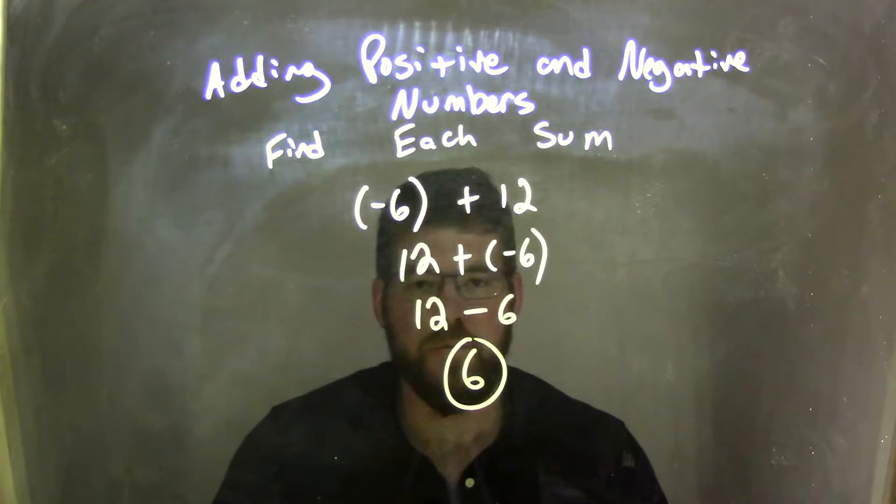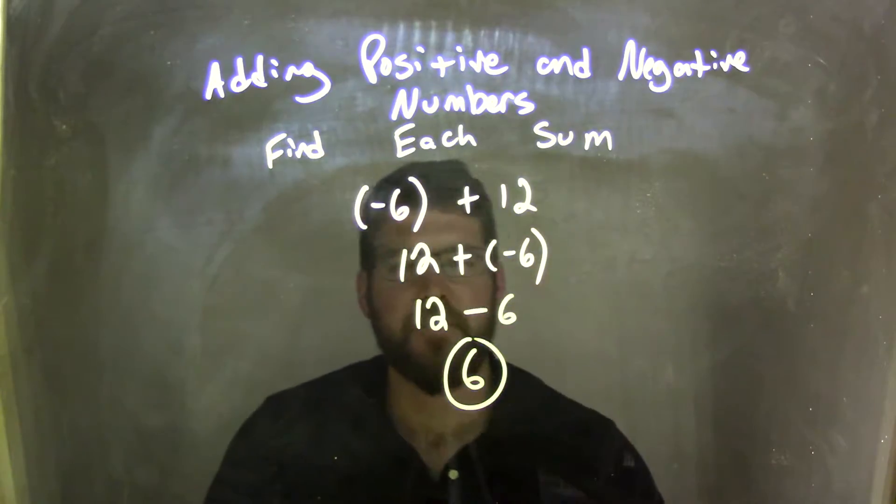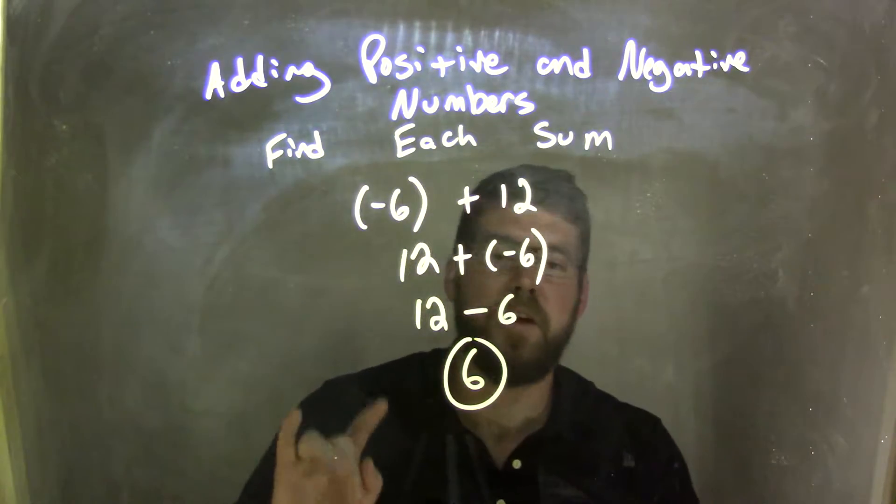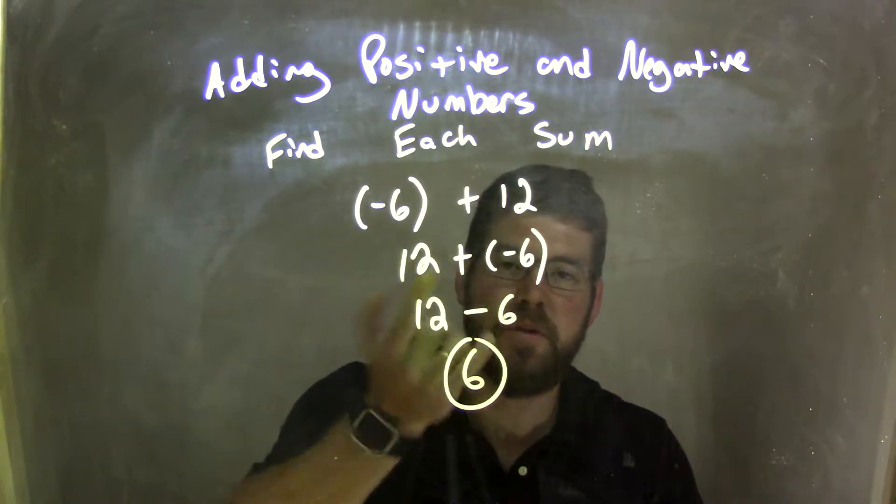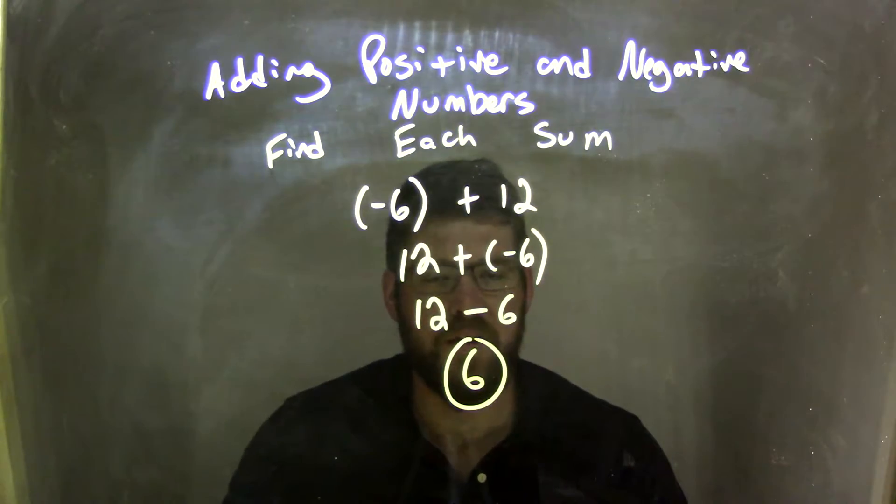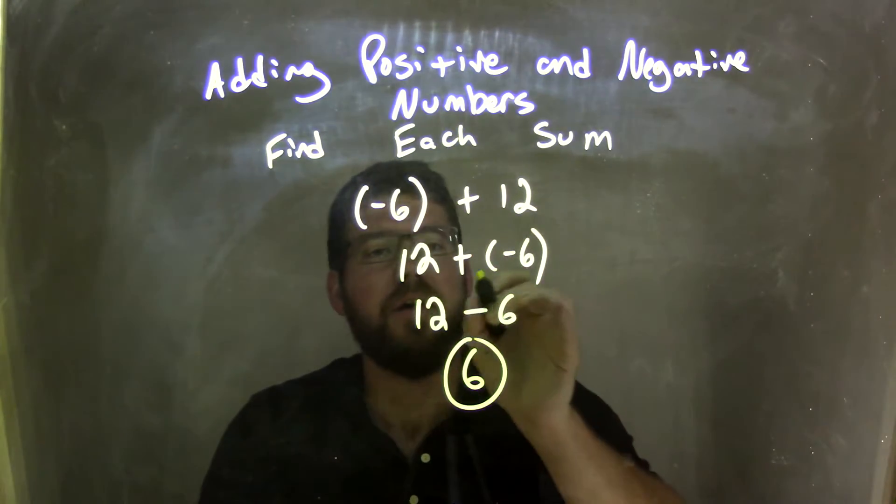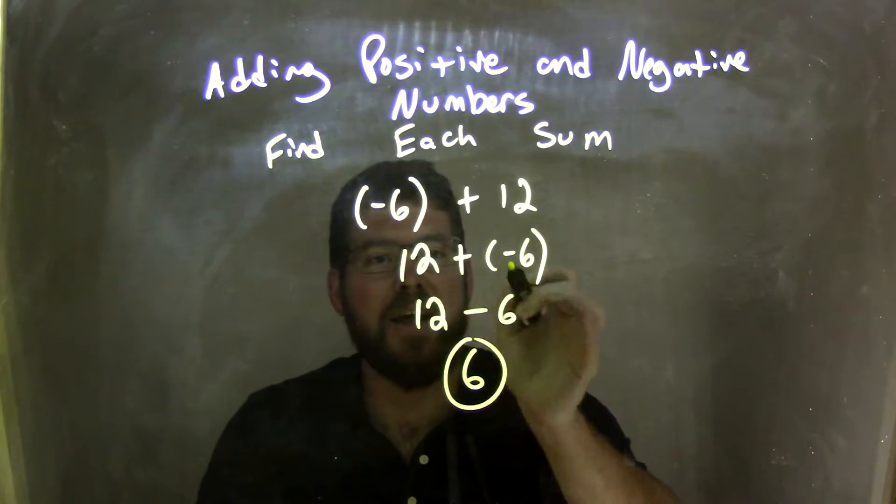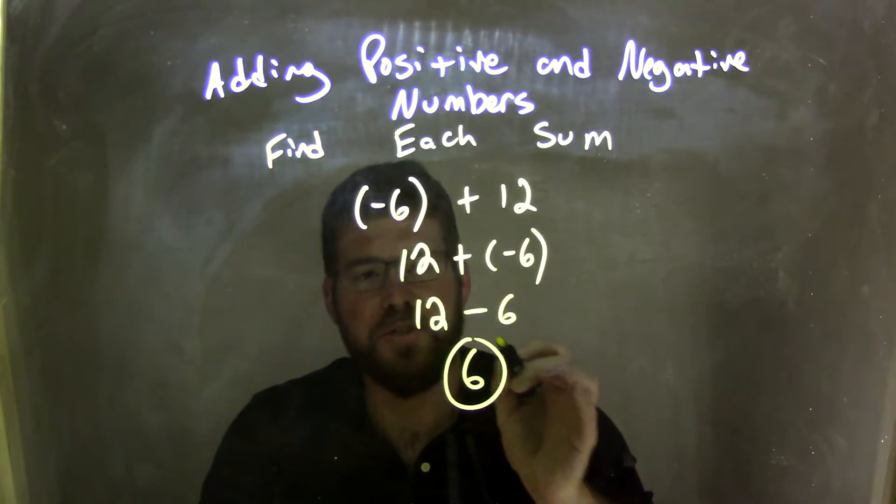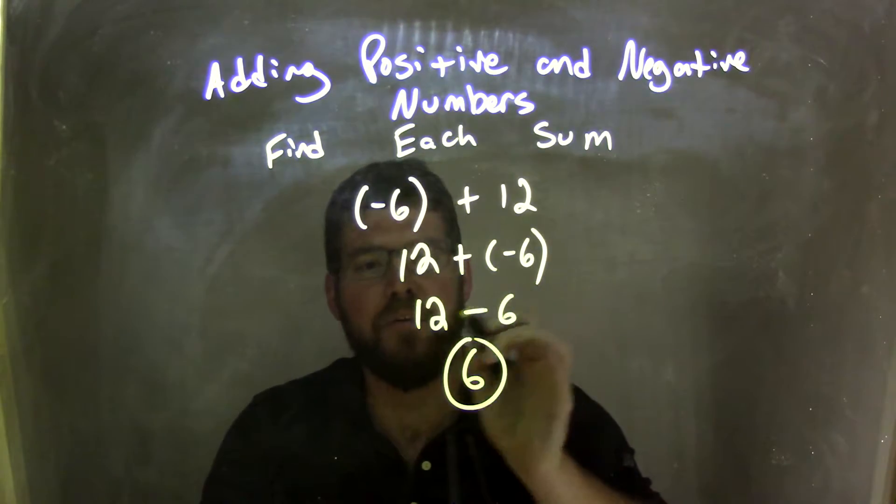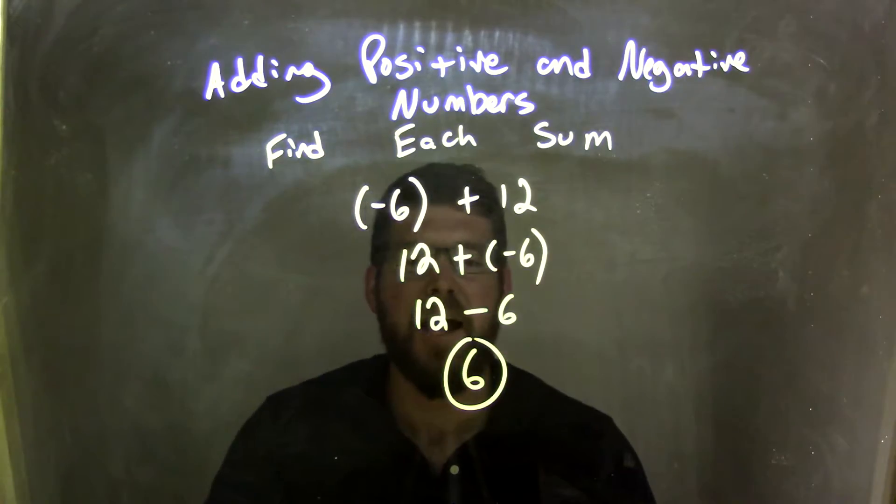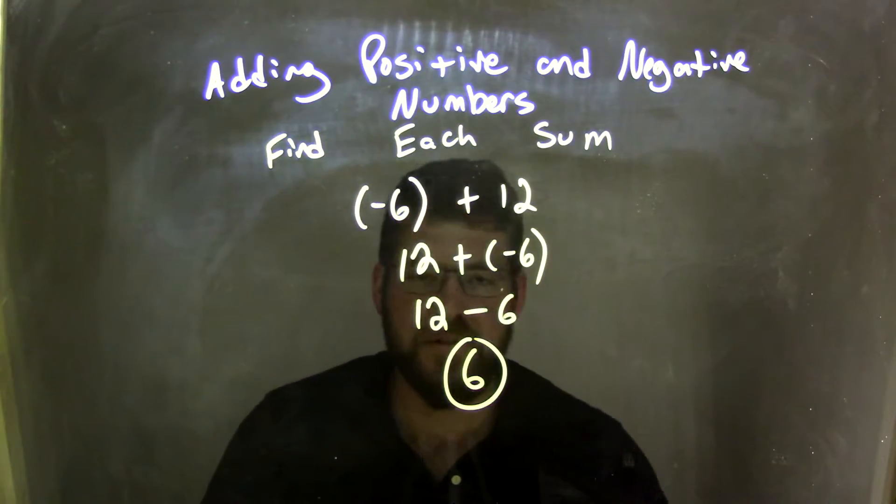Let's recap. We started with negative 6 plus 12. We used the commutative property to rearrange and flip it, and we have 12 plus negative 6 instead. From there, instead of adding a negative, we can rewrite it as subtraction. So instead of 12 plus negative 6, we have 12 minus 6, and that comes out to be 6, which is our final answer.